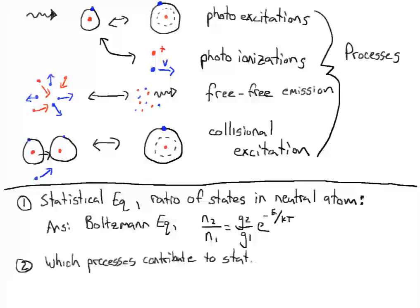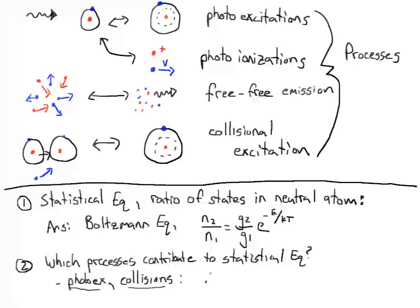Question number two: which processes contribute to statistical equilibrium? One possible answer is photo excitations, because the presence of photons can affect the ratio of excited to de-excited states. We also can have collisional excitation, so if we're colliding often with another particle, that can affect the ratio of states. To determine which is dominating — photo excitations or collisions — you need to compare the rates of excitation and de-excitation through collisions. A quick rule of thumb is to compare the Einstein A coefficient for spontaneous decay, which is a timescale for photo de-excitation, to the rate of collisions: the average over the number density of colliders NE, times the cross-section for collision, times the relative velocities of the particles, integrated over some distribution of velocities f(v).